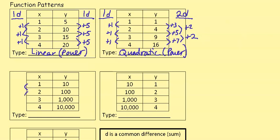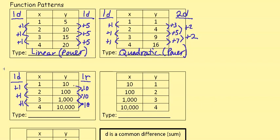For the next table, x-values add 1 (first common difference), but the y-values multiply by 10 each time: 10, 100, 1,000, 10,000 — that's a first common ratio. A first common difference for inputs and a first common ratio for outputs means it is an exponential function. Switching the x and y gives the inverse, which is a logarithmic function.